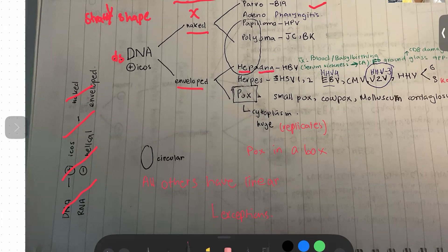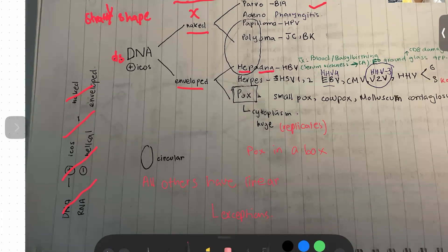If you go back and read it backwards, HBV is a DNA virus which is enveloped, double-stranded, and positive, and then it causes a Hepadnavirus. So we get a lot of information from this chart alone.